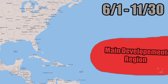The first thing we have to look at is where your main development region is. Africa would be just off the right edge of the screen, and from west Africa westward all the way until you hit about the Caribbean is your main development region. This isn't where the big super strong hurricanes develop — this is where they start out, then move west into the Caribbean, the Gulf of Mexico, or closer to Florida, Georgia, South Carolina, and North Carolina.